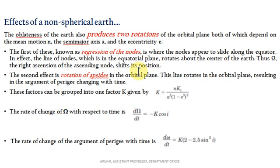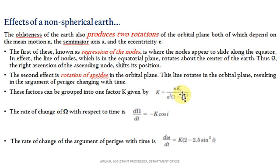The second effect is rotation of apsides in the orbital plane. This means the argument of perigee — the coordinates of the perigee — will change with time. From this, two quantities are derived: K = n·k₁·a² × (1 − e²)², and the rate of change of Ω (right ascension of the ascending node), given as dΩ/dt. These are the effects of non-spherical Earth.